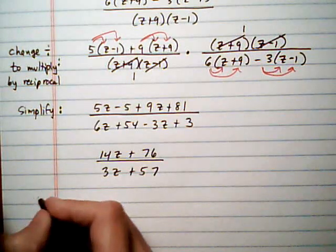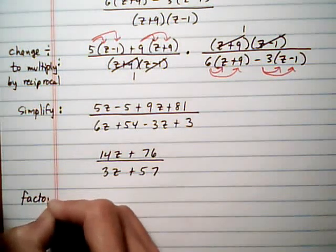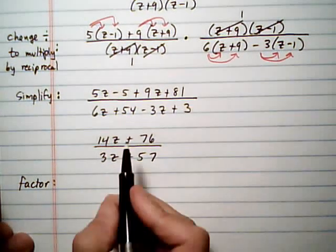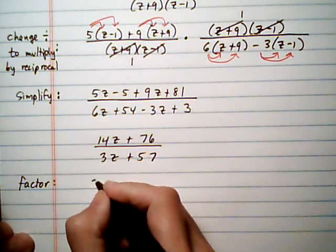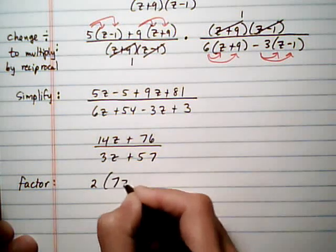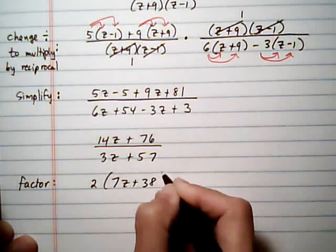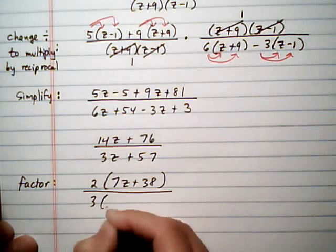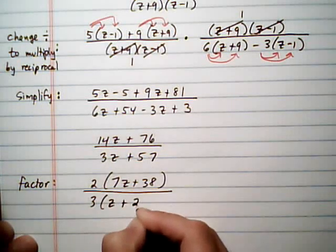Now we can try to factor and cancel. So let's see, first of all, if anything factors. We could take a 2 out of the top there, a GCF. And that would leave us with 7z plus 38. And we can take a 3 common factor out of here. We're left with z plus 19.